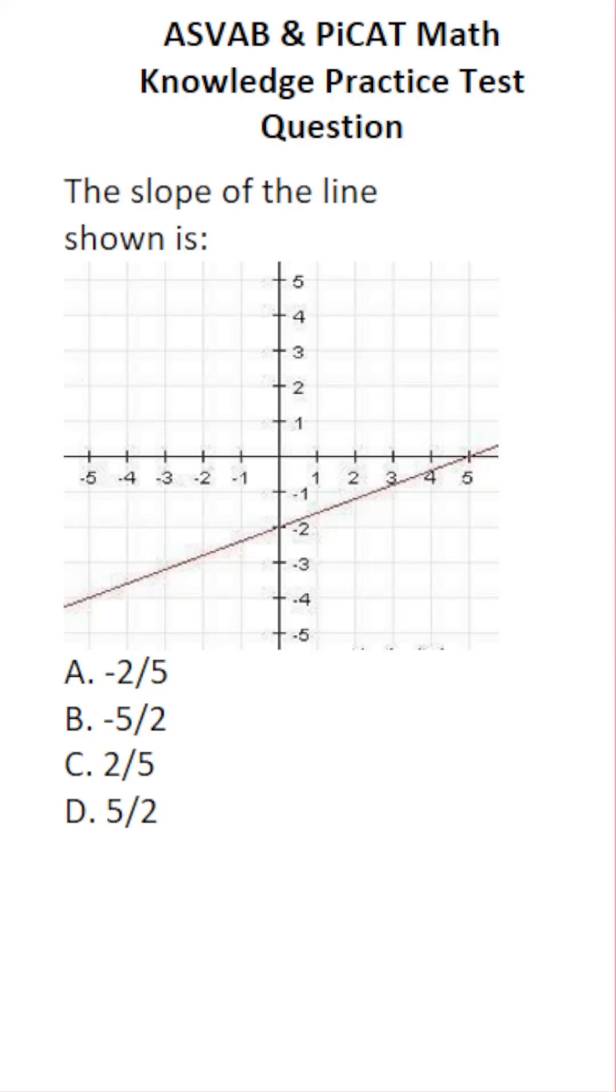This math knowledge practice test question for the ASVAB and PiCAT says the slope of the line shown is. So because this line is rising as it goes from left to right, we know our slope is going to be a positive value. Therefore, A and B are wrong, and we can say that right off the bat.